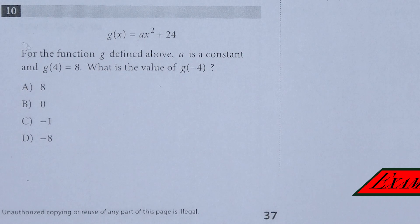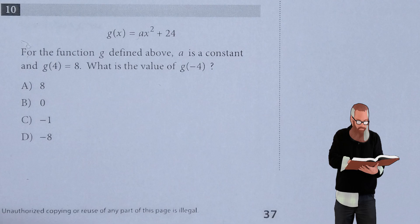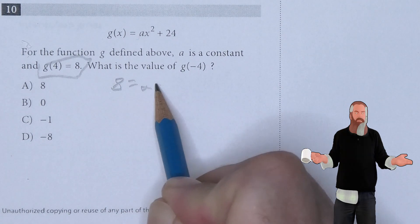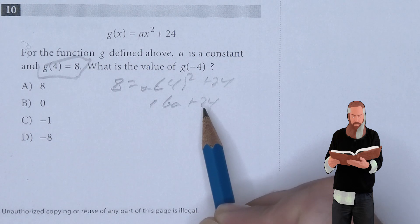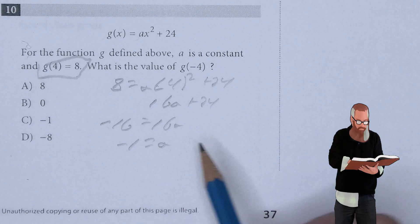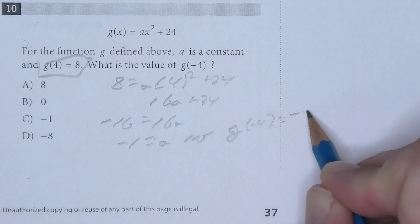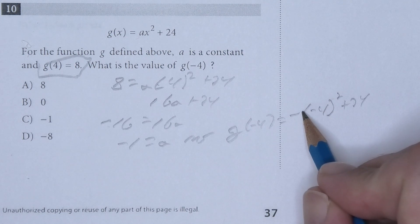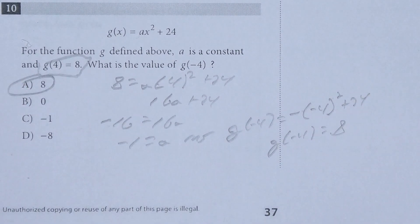For the function g defined above, a is a constant and g of 4 equals 8. What is the value of g of negative 4? Substituting into the equation: 8 equals a times 4 squared plus 24, giving 16a plus 24. Subtracting 24 from both sides: negative 16 equals 16a, so a equals negative 1. Then g of negative 4 equals negative 1 times negative 4 squared plus 24 equals negative 16 plus 24 equals 8. A is the answer.